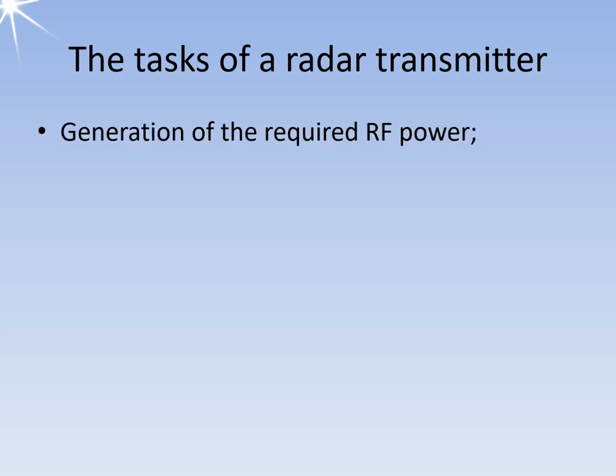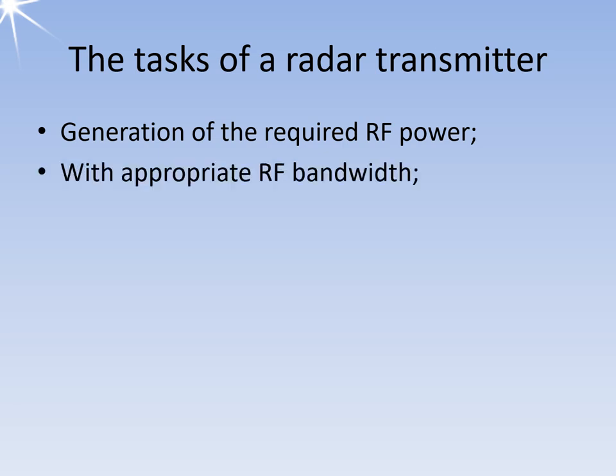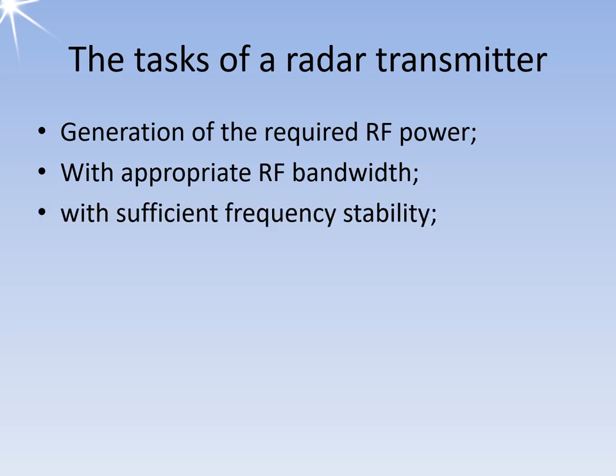The following technical characteristics are required of a radar transmitter. It must be able to generate the required RF frequency with the required pulse power, must have an appropriate high-frequency bandwidth, and must generate high-frequency power with sufficient frequency stability to enable further radar signal processing. It must also be easy to modulate and meet the pulse shape or waveform requirements.